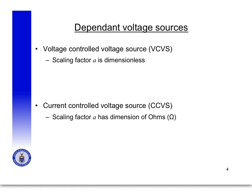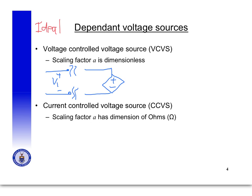Let's look first at ideal dependent voltage sources. The first kind is a voltage-controlled voltage source. Somewhere in our circuit we have a voltage V1, and then somewhere else in the circuit there's a voltage-controlled — or voltage-dependent — voltage source. The symbol we use has a scaling factor times the controlling voltage V1. For a voltage-controlled voltage source, the scaling factor A must be dimensionless, because the output must still be a voltage.